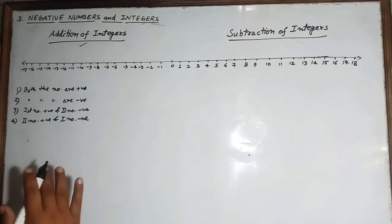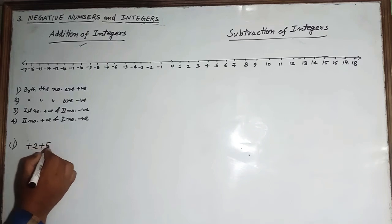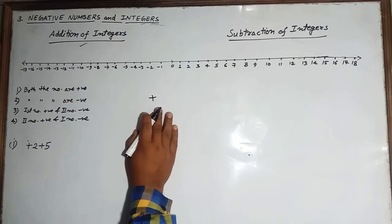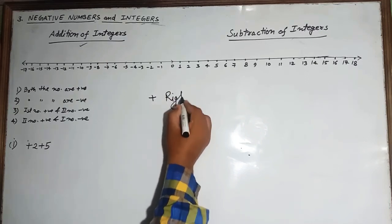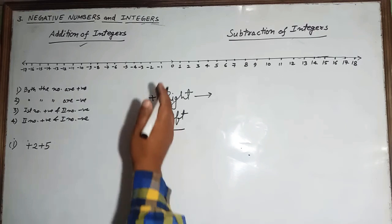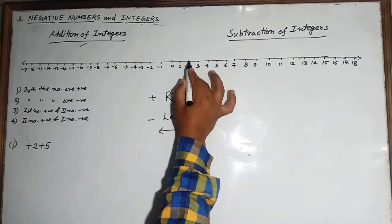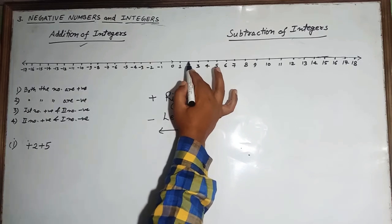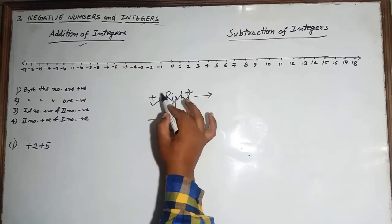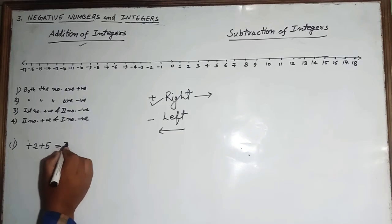Let's take the first example: 2 plus 5. Here, plus 2 is on the number line, and plus 5 means we move toward the right hand side. So from 2, we move 5 steps to the right — 1, 2, 3, 4, 5 — and we reach 7. So 2 plus 5 equals 7.